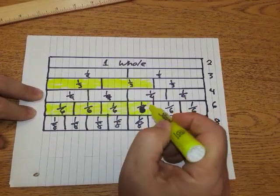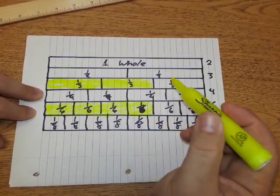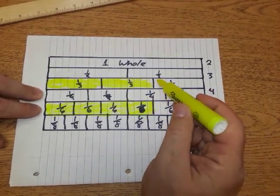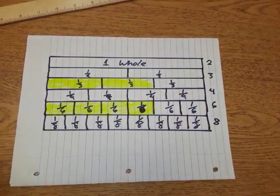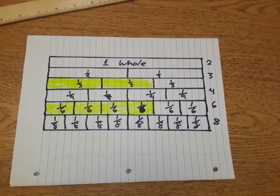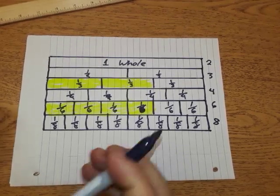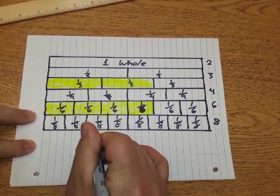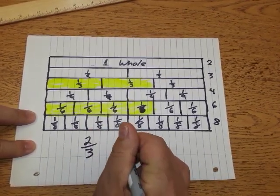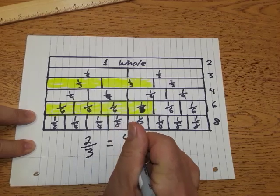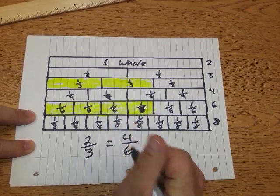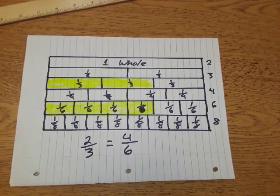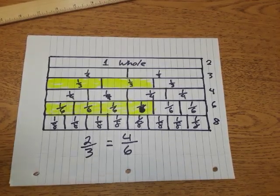Right there with that, you can see we'll use this later on when we start comparing fractions. We can see that two thirds is equal to four sixths. Two thirds, numerator-denominator, is equal to four sixths, numerator four, denominator six. And that's your lesson for representing fractions using a strip diagram. I'll see you next time.